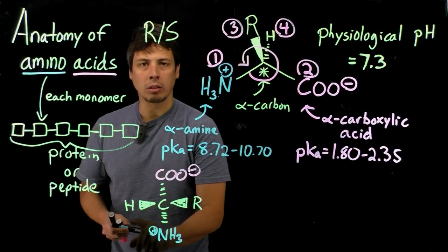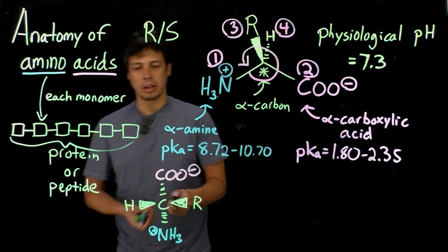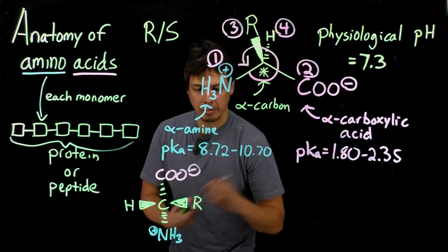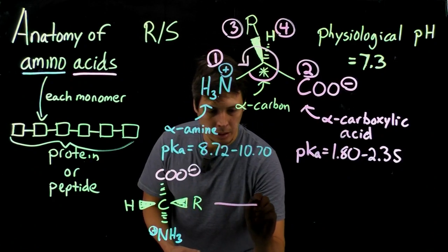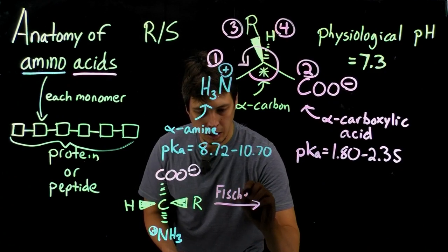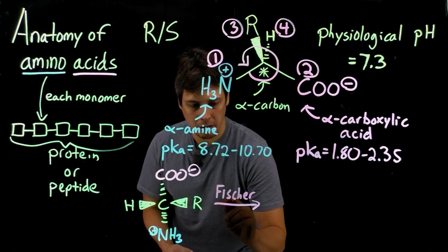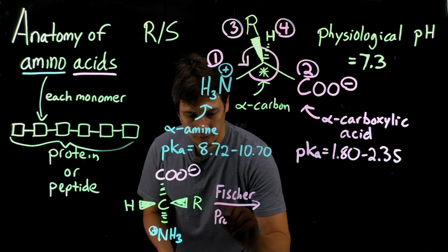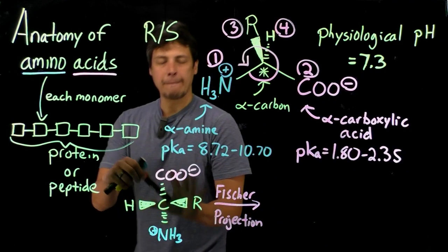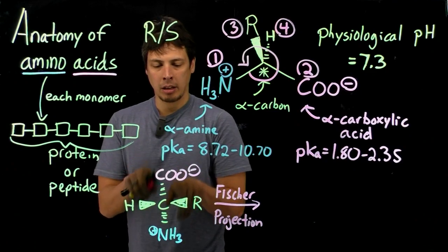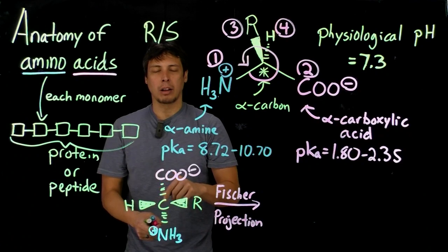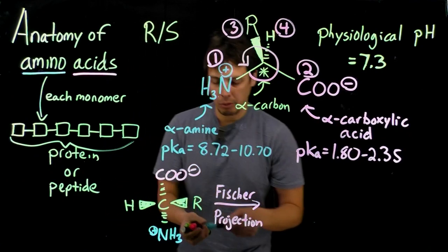So now notice that the lowest priority is not facing towards us, so it's going to be important in a second. So the way we draw this is in what's called a Fischer projection. And again, this is, this is in your textbook. And what we do is we flatten out the fact that instead of these bonds pointing either towards us on the sides or away from us on the top and bottom, we flatten out the bottom, we flatten out the bonds and remove the carbon.